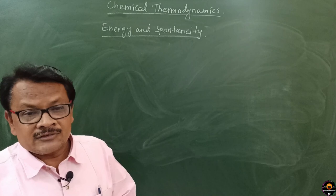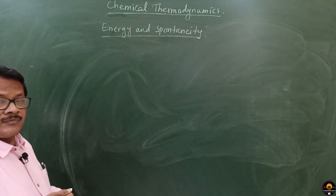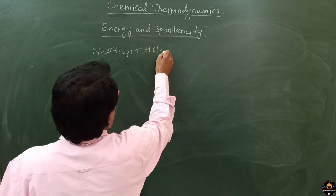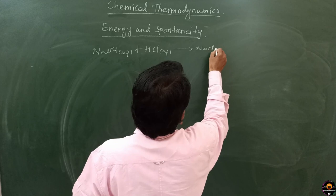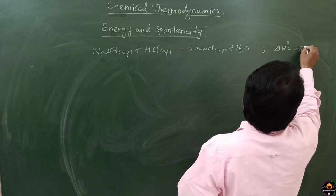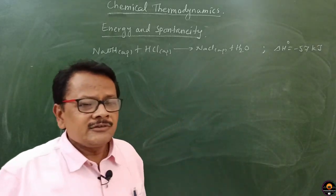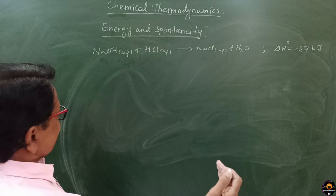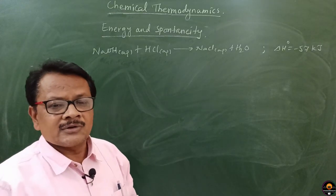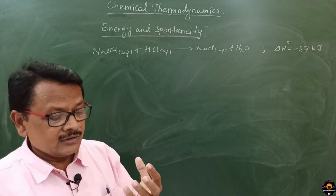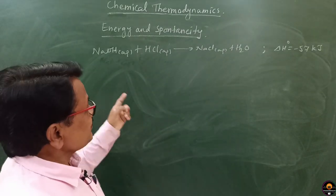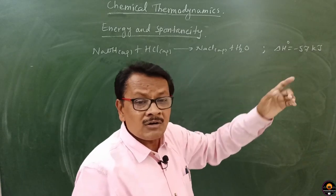We consider the neutralization reaction: NaOH(aq) + HCl(aq) → NaCl(aq) + H₂O, where enthalpy change ΔH = −57 kJ. During this reaction, when NaOH and HCl are added, NaCl and H₂O form and heat is given out. So the energy of the product side is less — this spontaneous reaction takes place in the direction so as to lower the energy of the system.